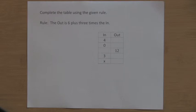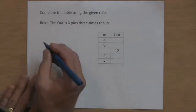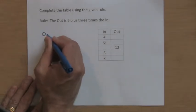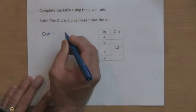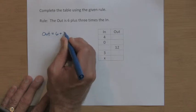Alright, hopefully you've paused the video, completed this table, and you're checking your work. Here's what goes in this table. The rule here: the out is six plus three times the in. So if you think of that as an equation, you can say the out is six plus three times the in.